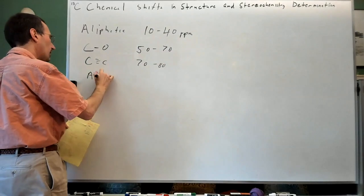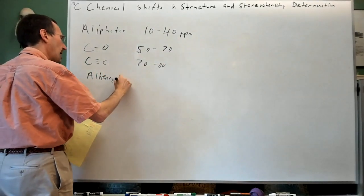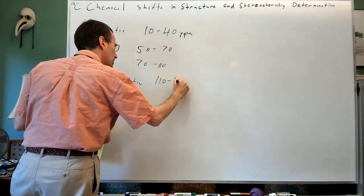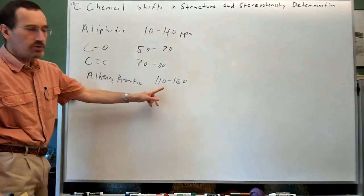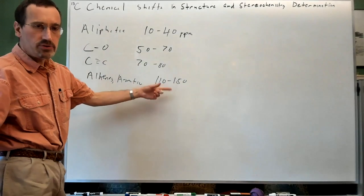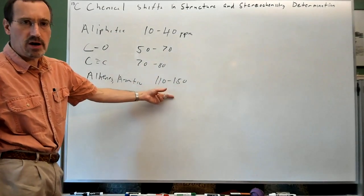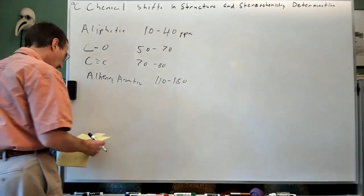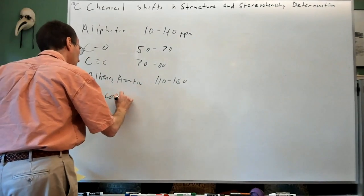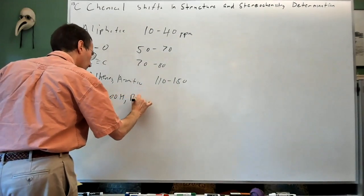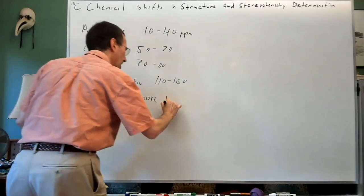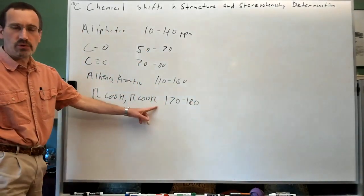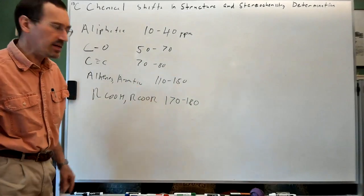Alkenes and aromatics are typically about 110 to 150 ppm, and these numbers are rough numbers. I'll show you today plain ordinary compounds where a carbon on an aromatic ring appears at 160 because it's connected to an oxygen atom. Esters and acids are typically about 170 to 180 ppm. Conjugation can shift things one way or another.